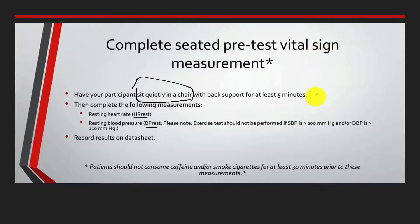We want to get participants down to essentially their basal resting metabolic state. Once they're there, we get heart rate — via heart rate monitor, ECG, or manual pulse check for 60 seconds, 30 seconds multiplied by two, or 10 seconds multiplied by six. We also take blood pressure. During exercise, systolic blood pressure should not exceed 200 mmHg and diastolic should not exceed 110 mmHg. If we exceed those values we need to terminate the test.